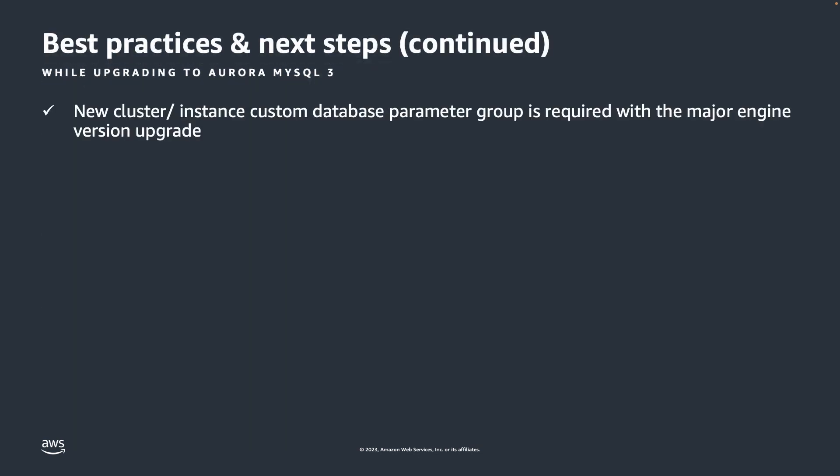If you're using any custom database parameter groups, those are major version specific, meaning you will need to create new MySQL 8 compatible versions of your custom parameter groups and then apply any necessary custom values for the desired parameters. You can find more information about parameter comparisons in the Amazon Aurora documentation. An important callout here is with the lower_case_table_names parameter: if you've had a custom value for this parameter, make sure to use the same value and set it at the time of cluster creation, as any change to this parameter will have no effect after the cluster is created.